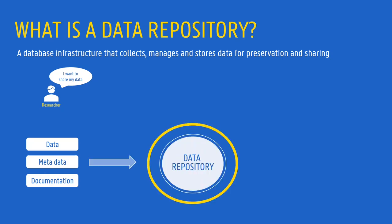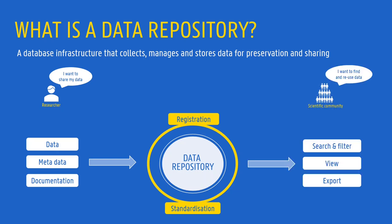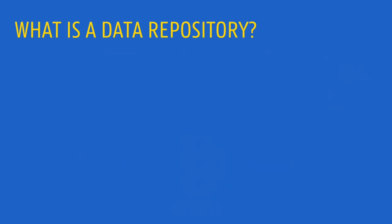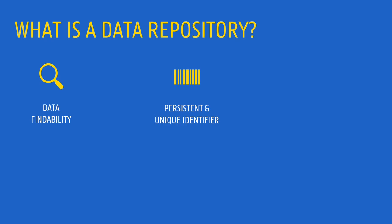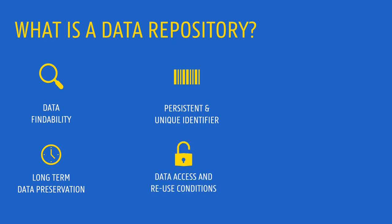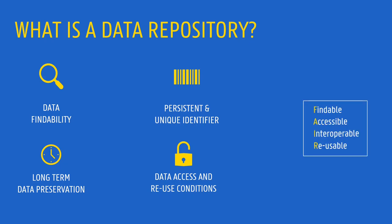During data import, the data is registered and possibly also standardized. Once the data import is finalized, the data is shared and preserved. Others can now search, view or export the data. A data repository is the go-to place to find data and identify data unambiguously. This is enabled through the use of metadata and persistent and globally unique identifiers. A data repository ensures that data remains available for the long term in a secure manner. Moreover, it makes sure that it is clear how the data can be accessed and reused, thereby generating FAIR data.